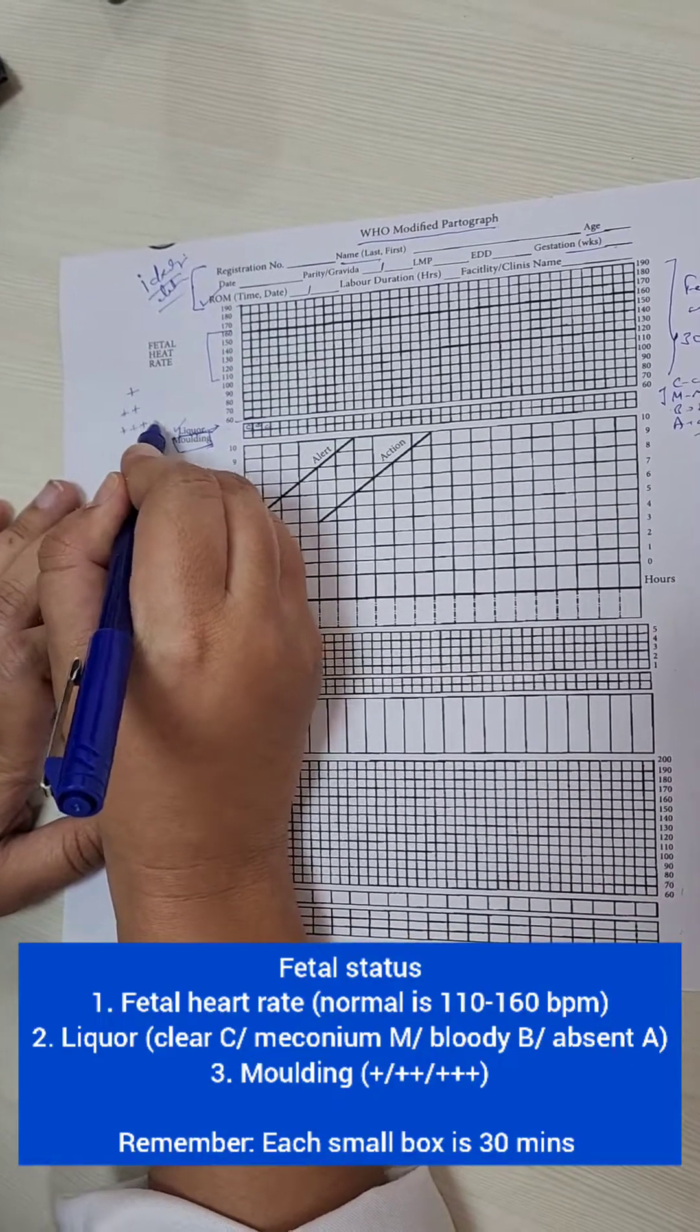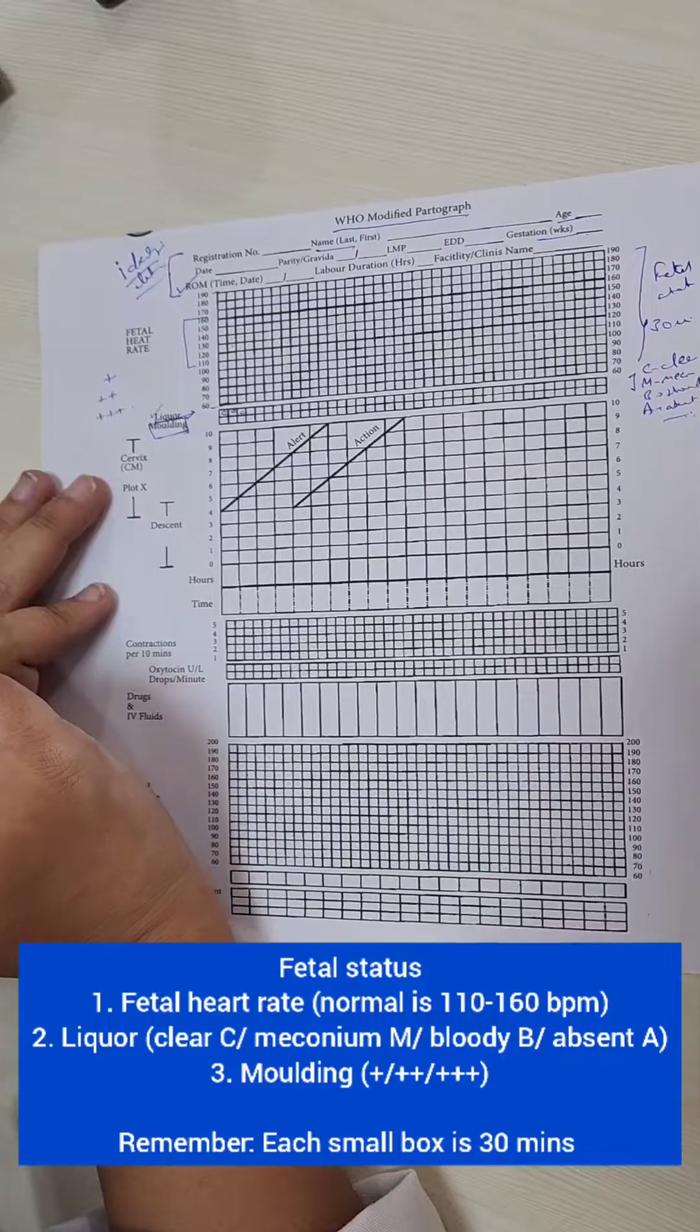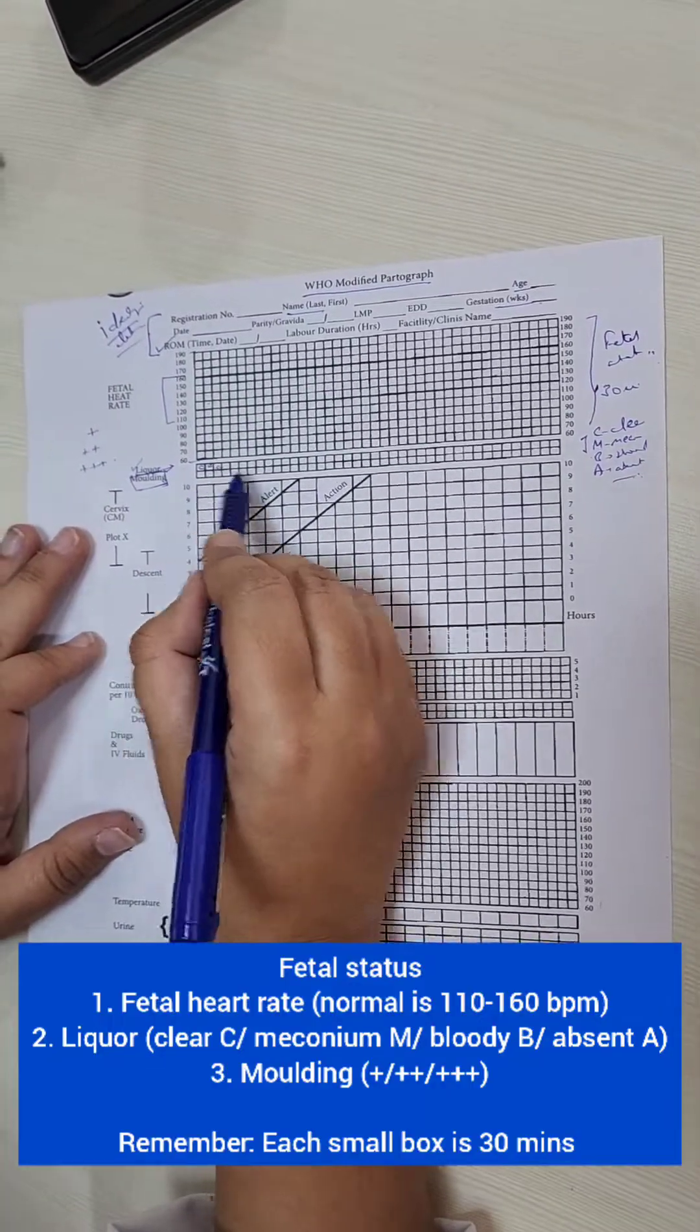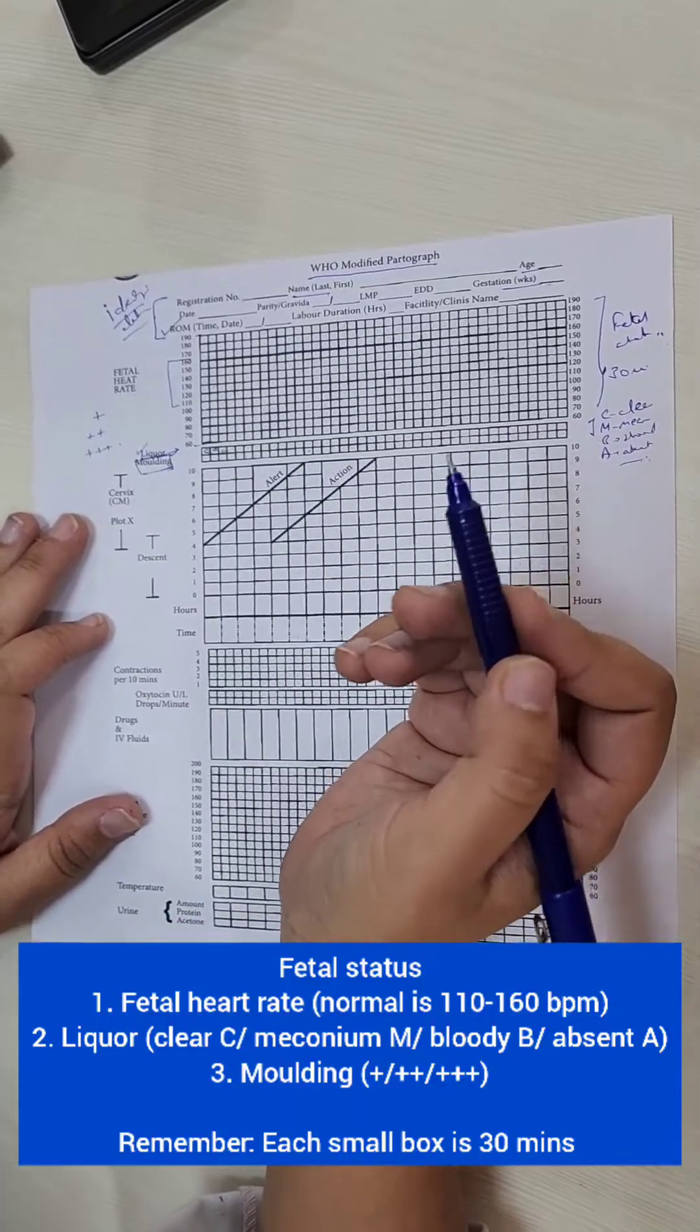And this is represented as plus, plus, plus or 3 plus. Depending on the extent of molding this has to be filled here whenever we do a vaginal examination which is usually once in 4 hours.